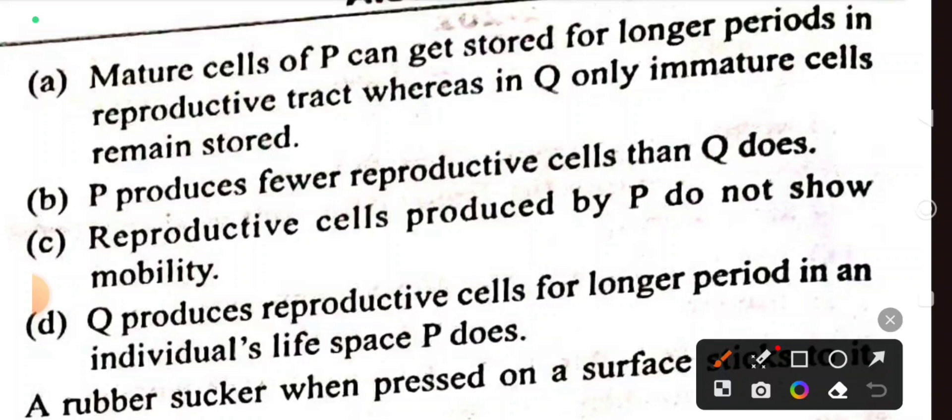Option B: P produces fewer reproductive cells. No, males produce more. Option C: Reproductive cells produced by P do not show mobility. No, sperms move. Option D: Q produces reproductive cells for longer periods. No, P does. So option A is the correct answer.